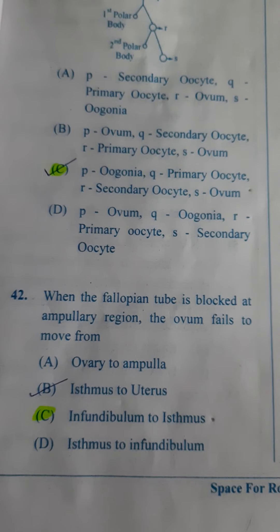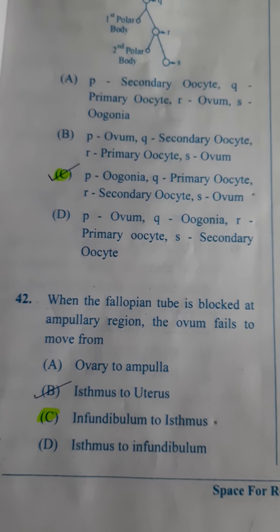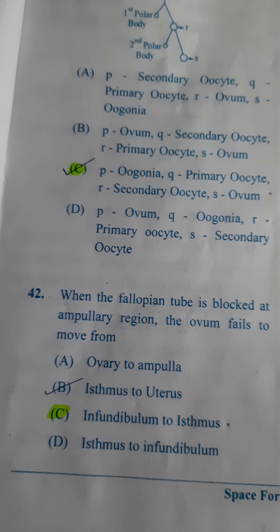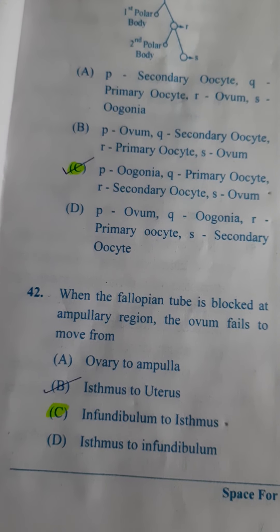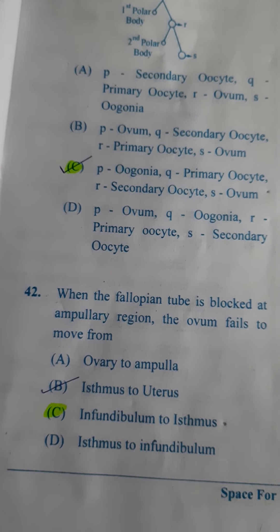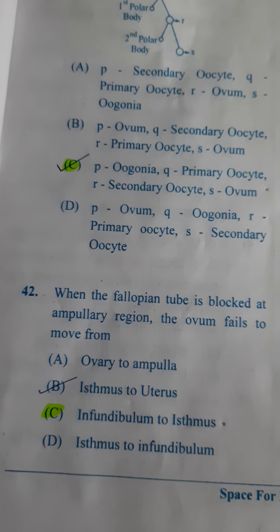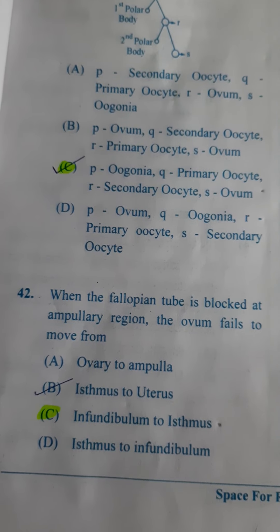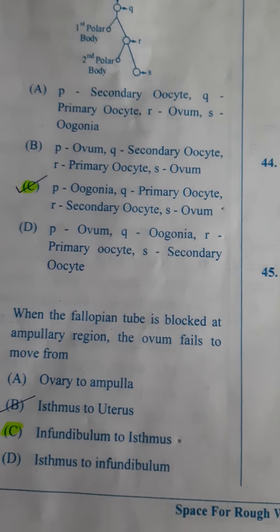Next one: When the fallopian tube is blocked at the ampullary region, the ovum fails to move from — straight question — it fails to move from the infundibulum to the isthmus. So the answer is C.